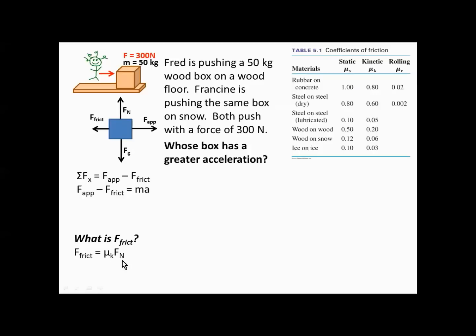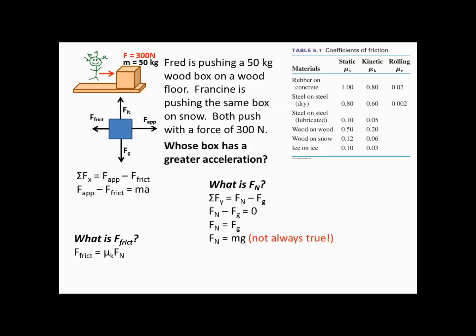We have the coefficient of kinetic friction times the normal force. To find the normal force, we look at the y-components. The box is not accelerating in the y-direction, so the sum of forces equals zero. That means the normal force equals the force of gravity, which is mass times gravity. The normal force is not always equal to mass times gravity, but in this case they are balanced. So the normal force equals 50 kilograms times 9.8, giving us 490 newtons.